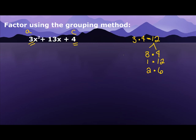Now we need to find which one of these multiples of 12 also adds to 13. So let's see. 3 plus 4 is 7. 1 plus 12 is 13. There it is right there.